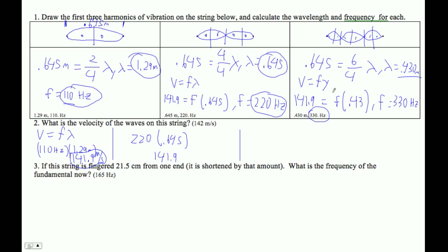Should also be this one here. We should be able to get it by going this times this. So 0.430 times 330, these should all be the same wave speed. You don't need to do it three times, I'm just saying these all should be the same.